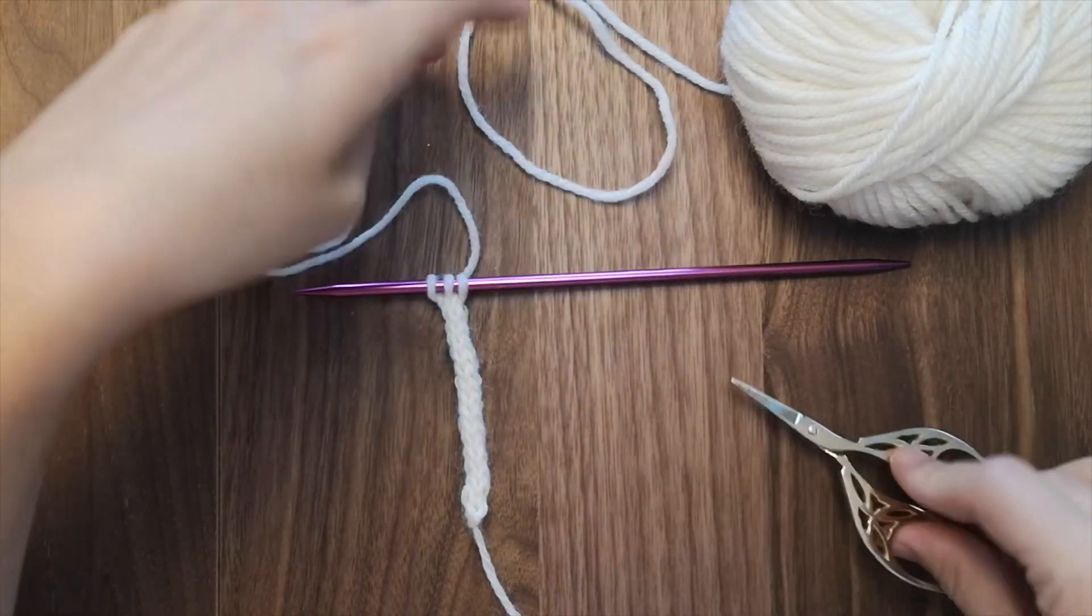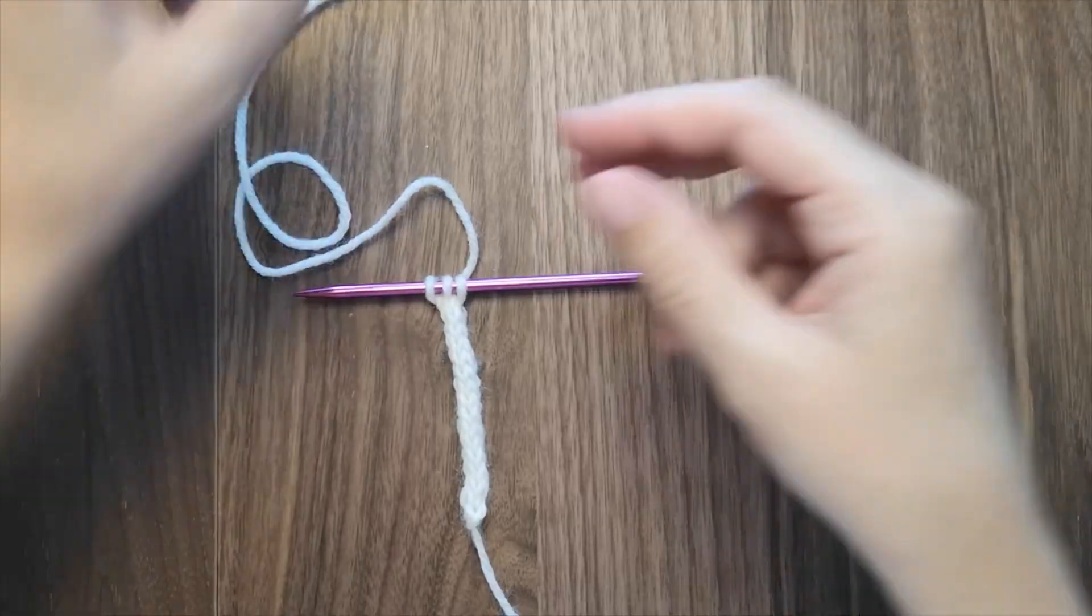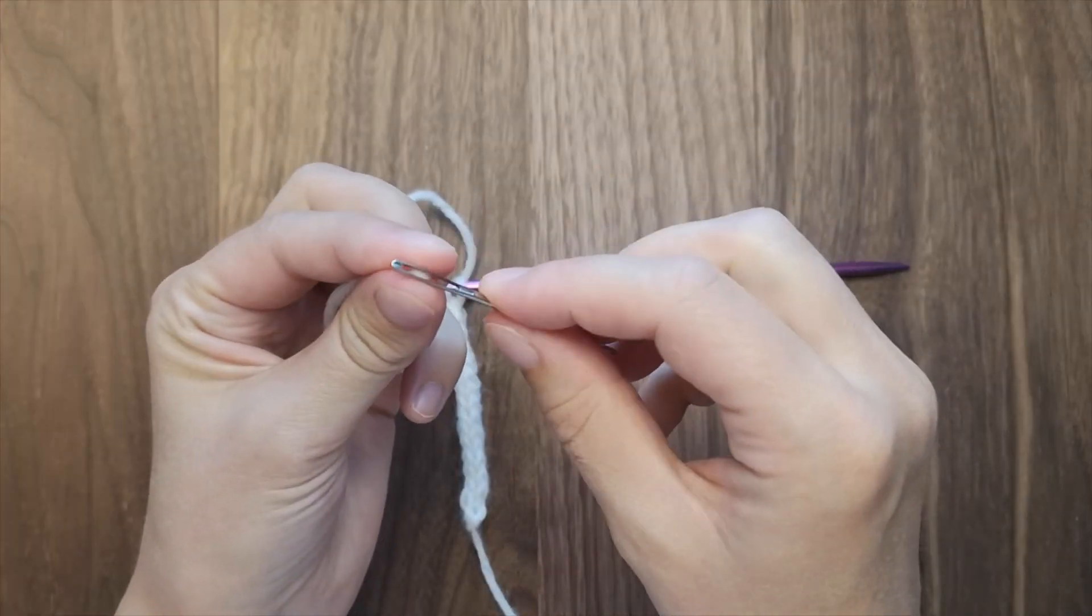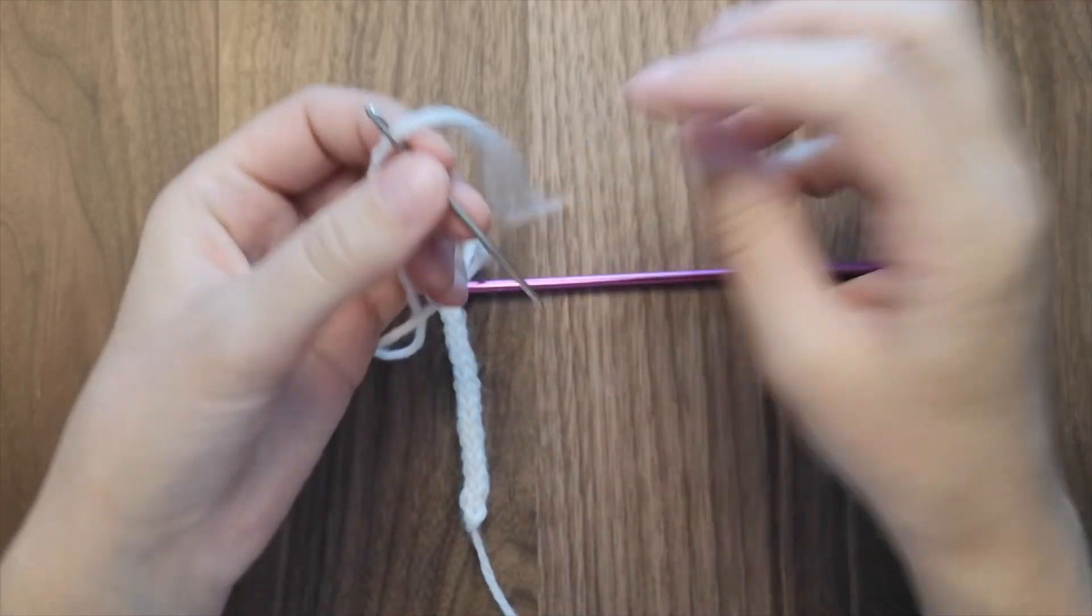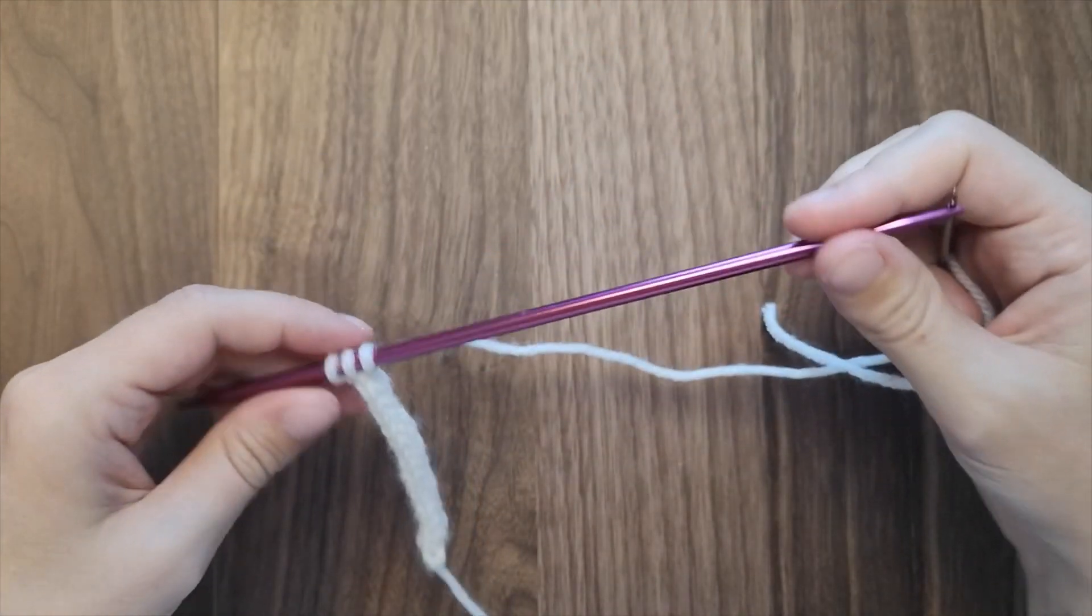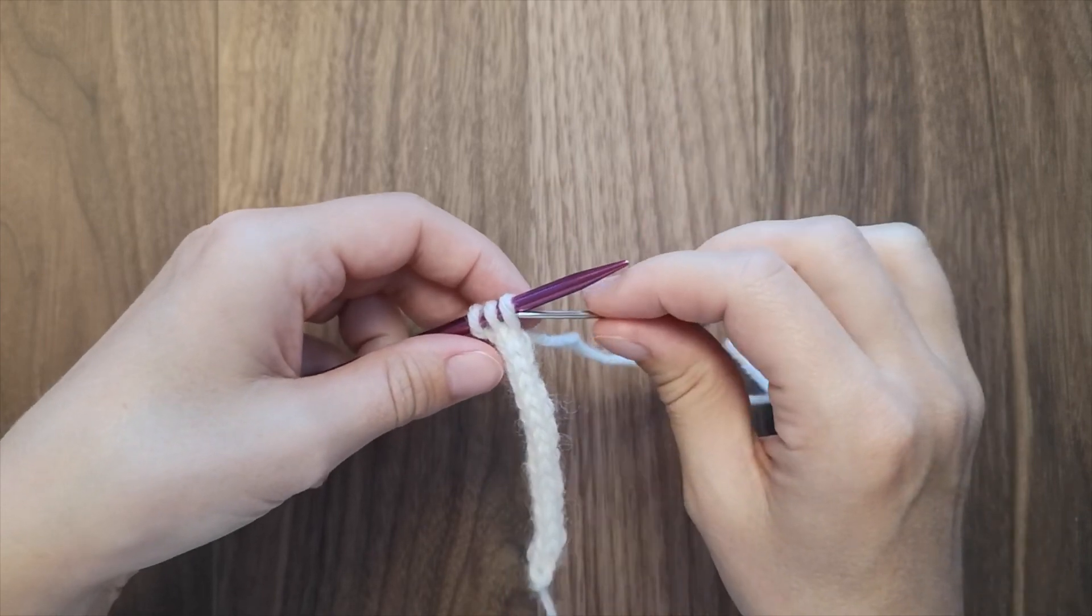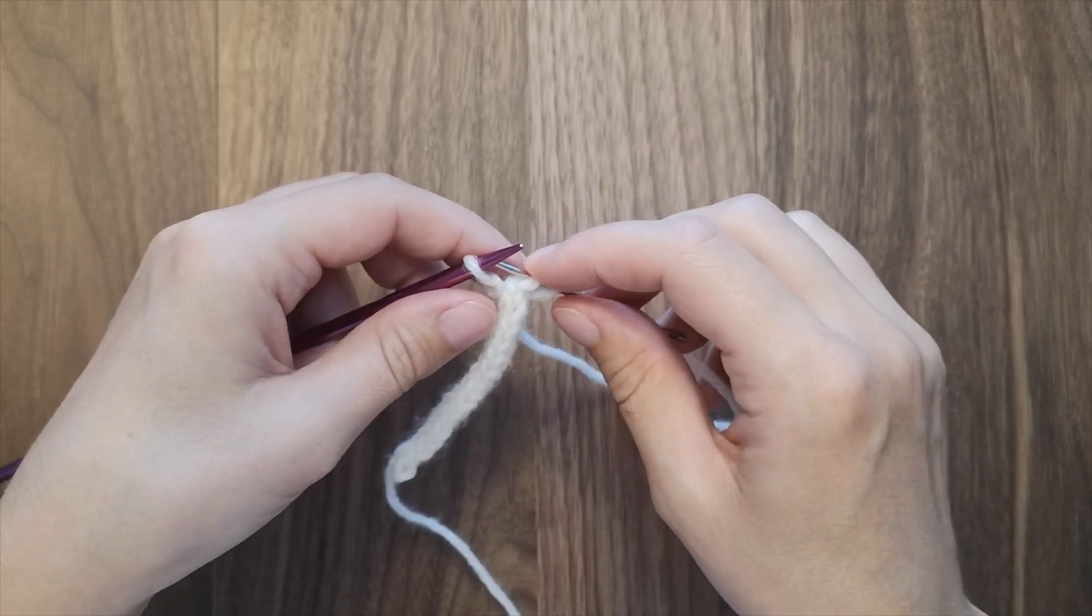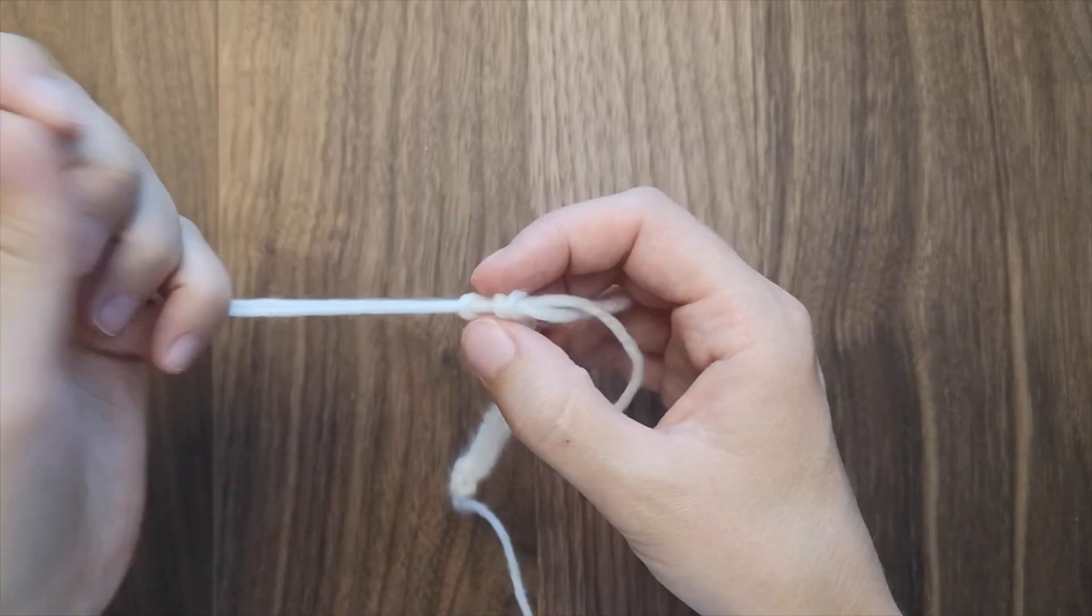When I'm happy with the length, I like to cut the yarn and thread it on the tapestry needle. Then I slip the stitches over to the tapestry needle and tighten.